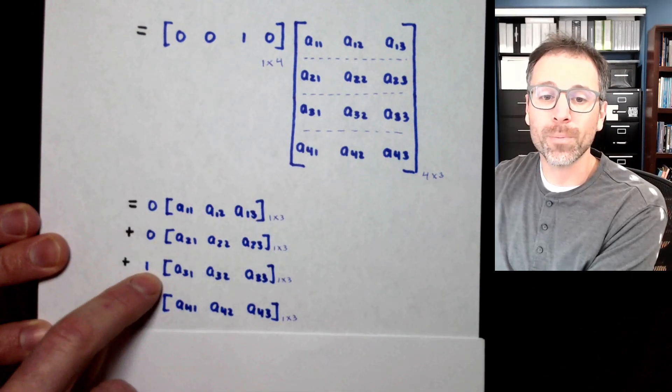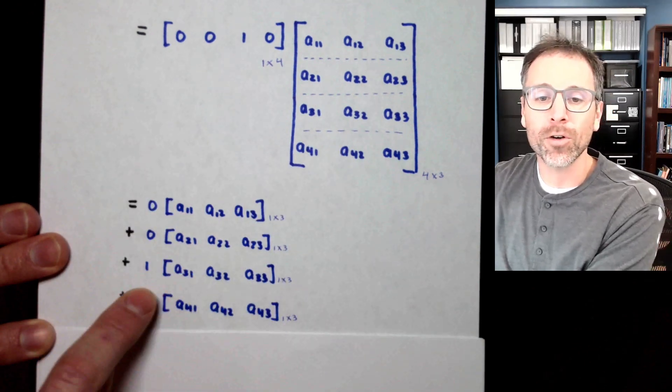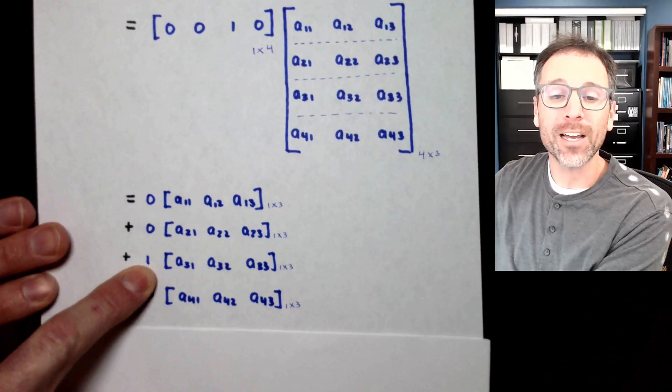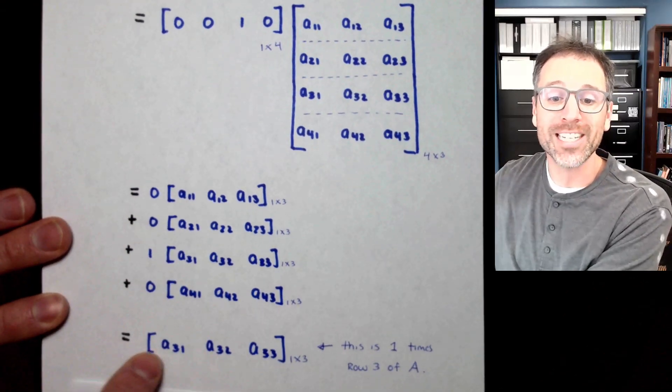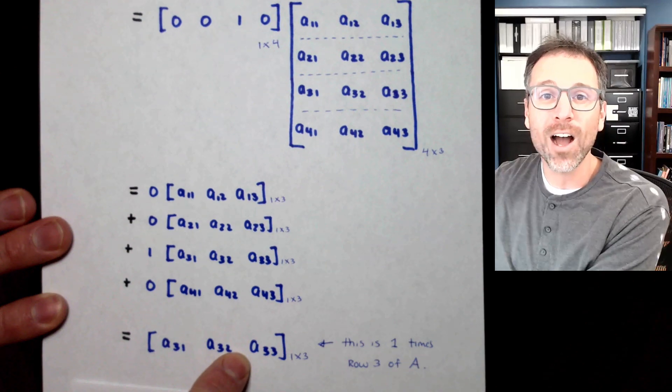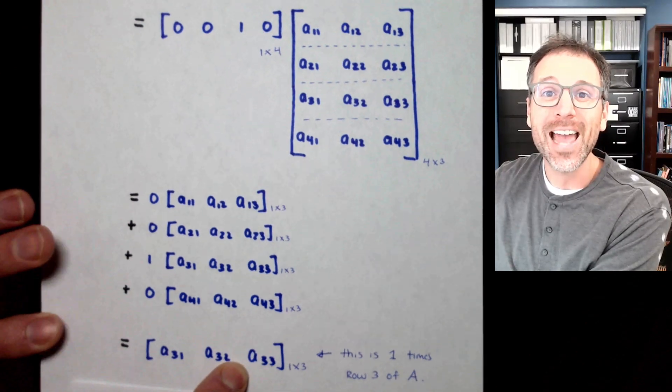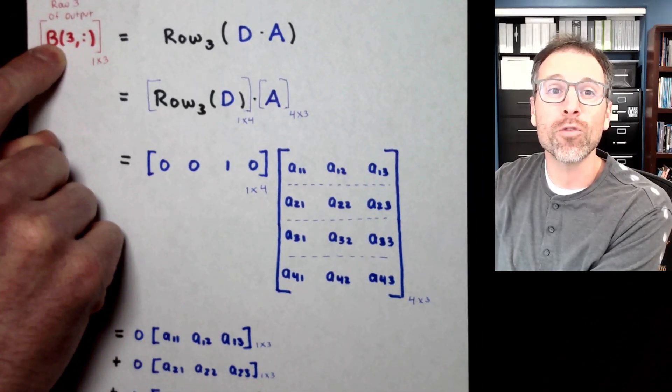All the zeros disappear and I'm left with one times the third row. One is a very beautiful scalar because I don't have to do anything to make that work. So now this is just row three of my original matrix A and we place that result in the third row of our output.